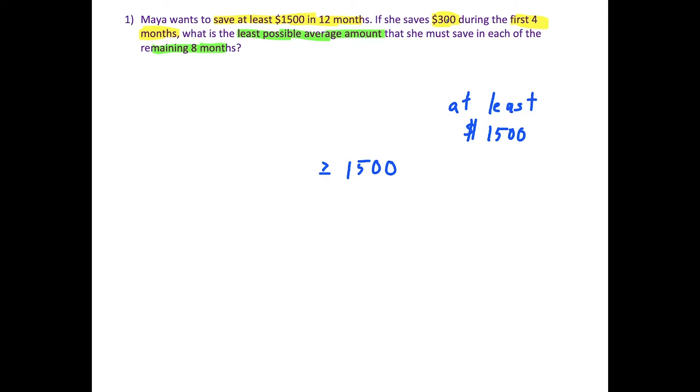We're told here that she already saved $300, so that amount is fixed. Plus, the question is, what is the least possible average amount that she must save in each of the remaining eight months? So if we define the variable x here, x is going to represent the average amount of money Maya saves in the remaining eight months.